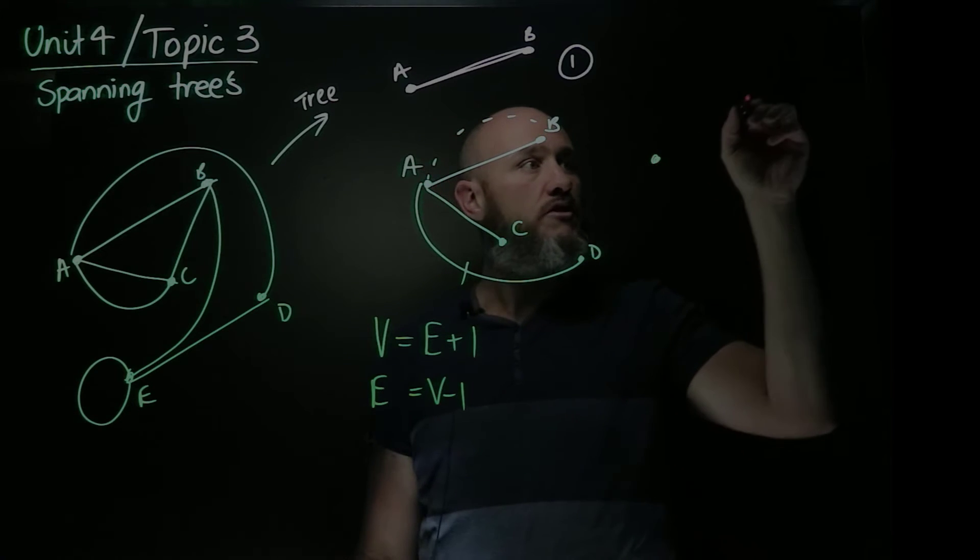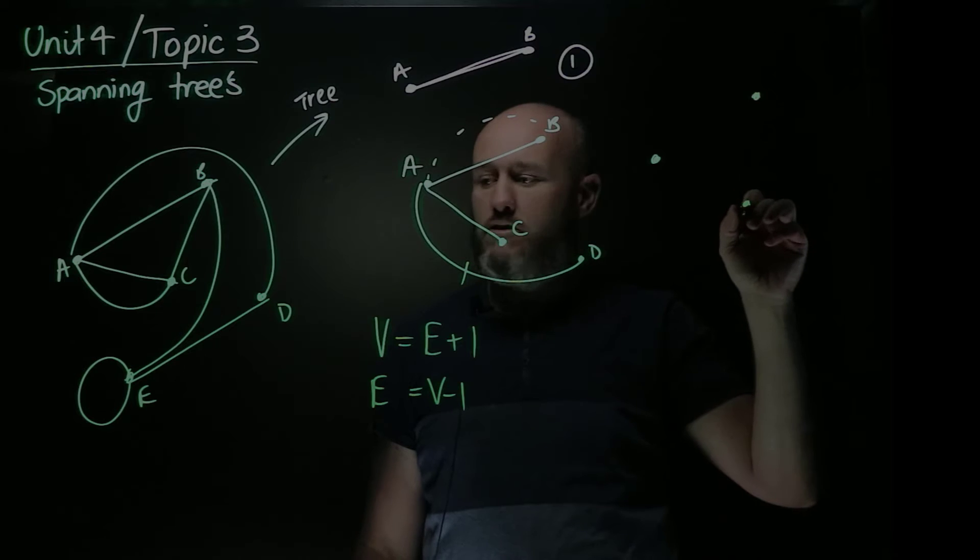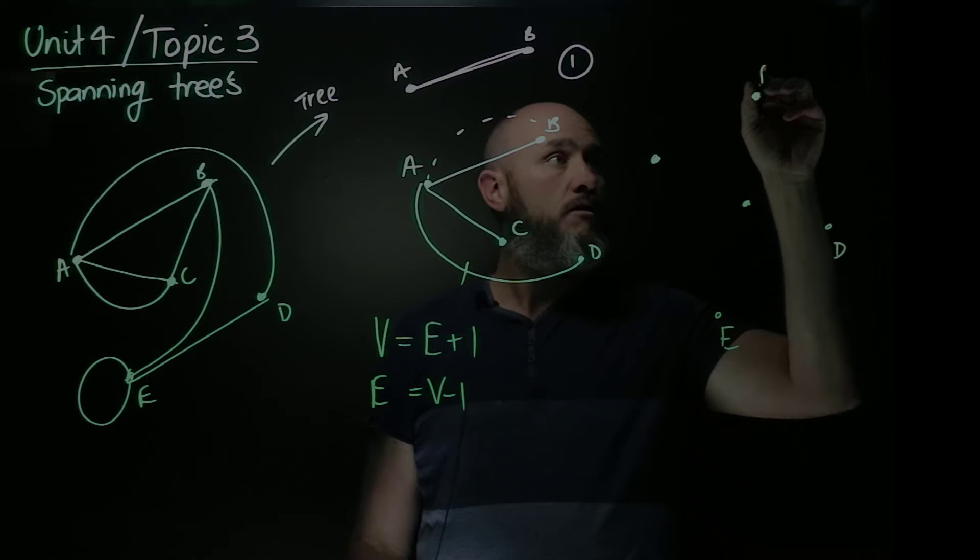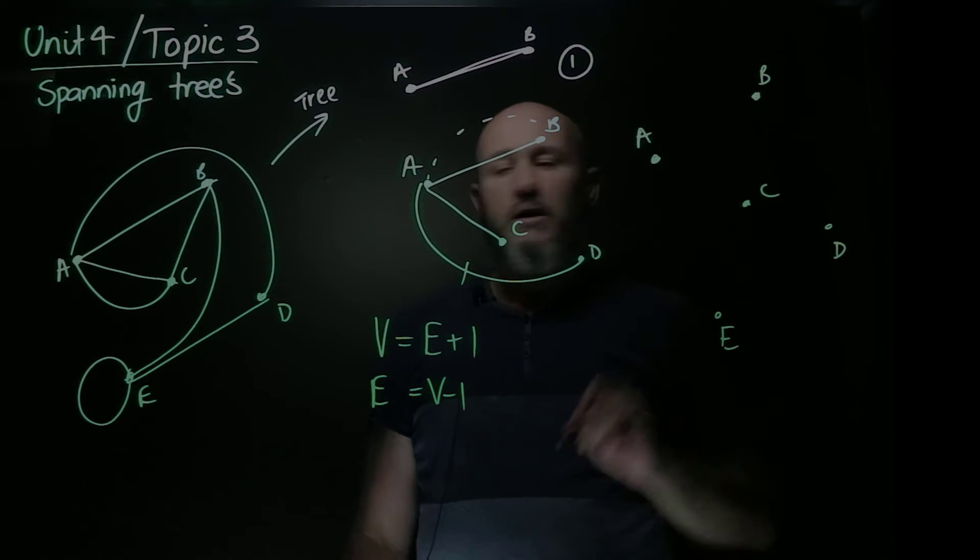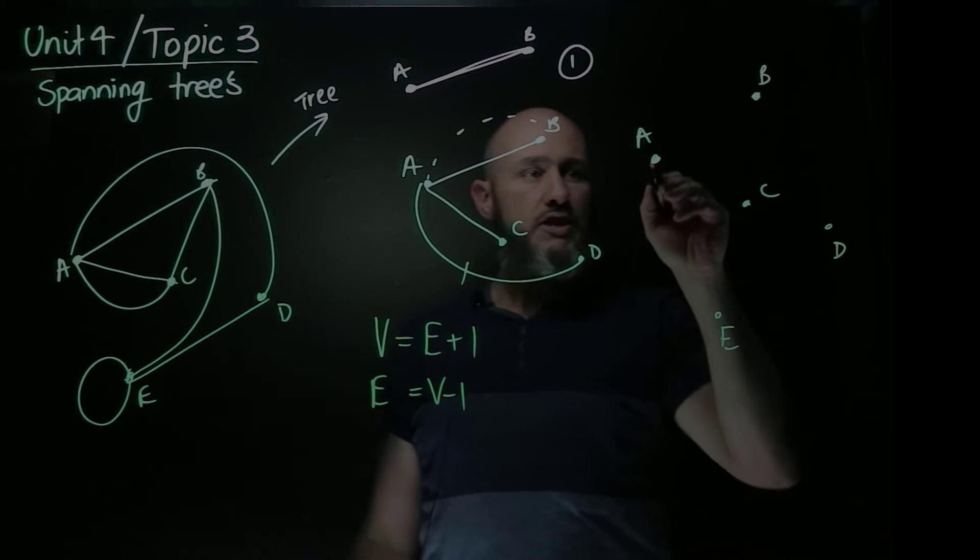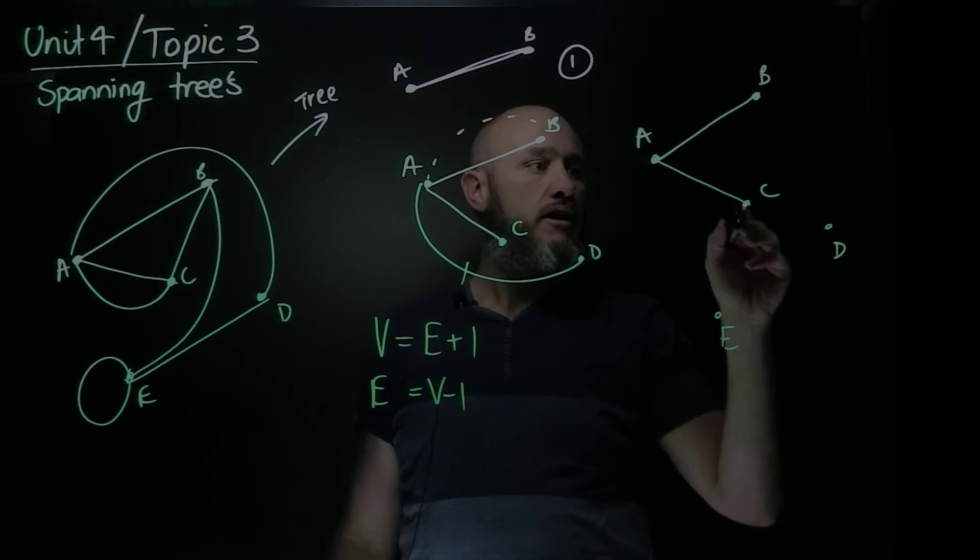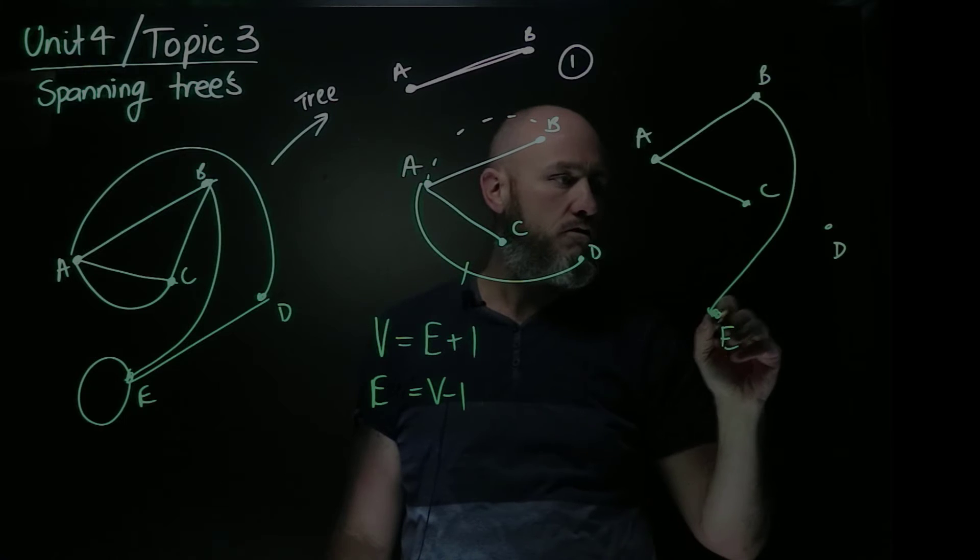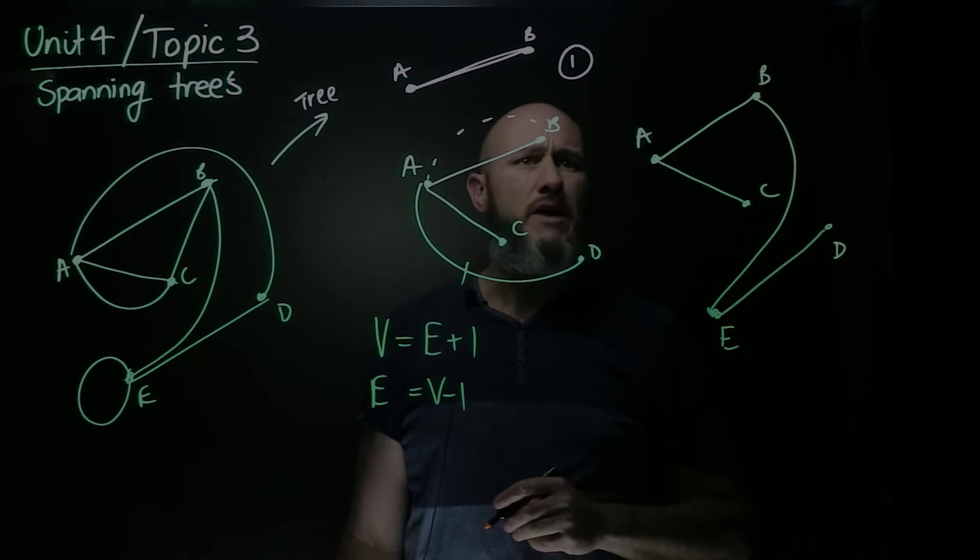So let's just pop this A, B, C, D, E, and I'm just going to use this to connect up. So we'll start with A, A can connect to B, A can connect to C, B connects to E, and E connects to D.